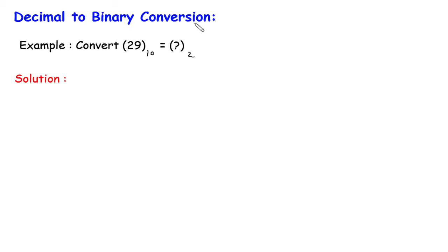Decimal to binary conversion. Convert this decimal number into its equivalent binary number.